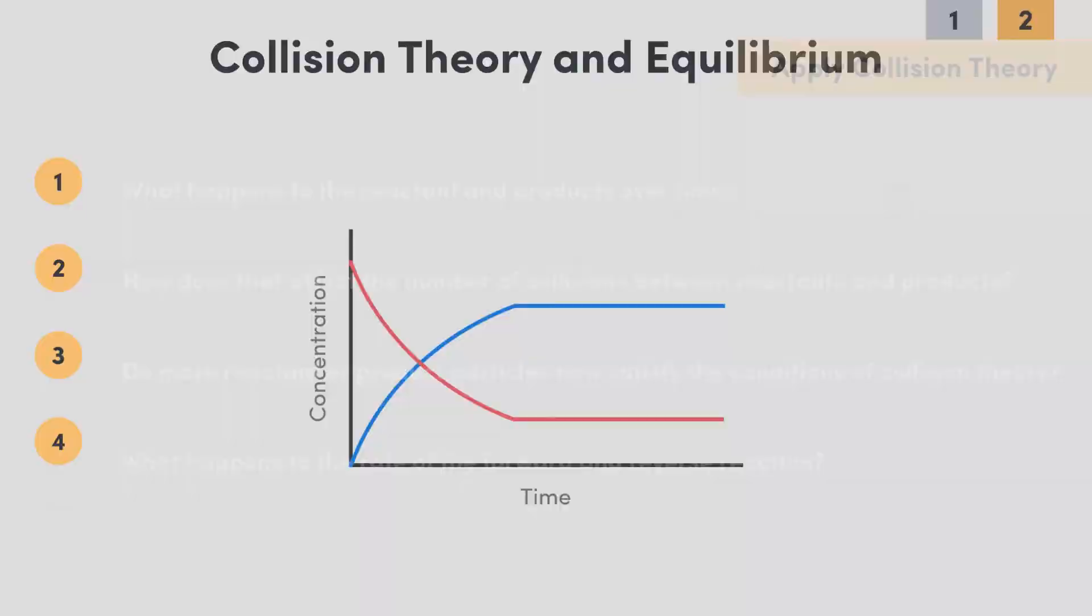It's best to think about one direction of the reaction at a time, so let's start with looking at the rate of the forward reaction caused by the changes in the concentration of reactants.